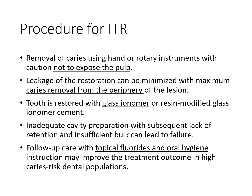The ITR procedure involves removing caries using hand instruments or rotary instruments — unlike ART, rotary instruments can be used in ITR — ensuring the pulp is not exposed. Leakage of restorations is minimized by maximum caries removal from the periphery of the lesion. The tooth is restored with glass ionomer or resin-modified glass ionomer. Adequate cavity preparation is essential, as insufficient retention or bulk leads to restoration failure. Follow-up care with topical fluoride and oral hygiene instructions improves outcomes in high-caries-risk populations.